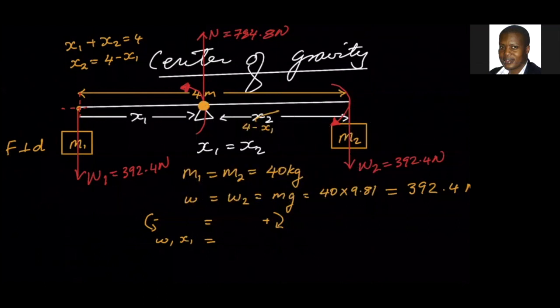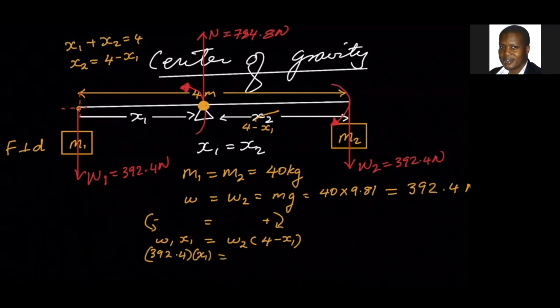All right, so w1 times its distance from the point that you are saying we are rotating the object from is x1. Let's substitute: w1 is going to be 392.4 multiplied by x1. You can solve for x1, two meters. So it doesn't matter where you're actually choosing the rotation point. We can make the same exercise by choosing the rotation to be existing at m2, and then you'll see that it's one of the same calculation.